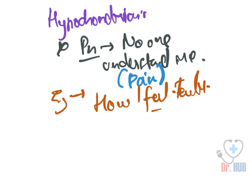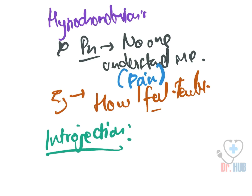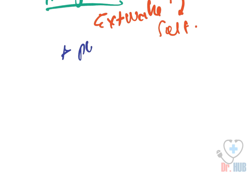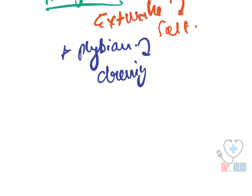Next is introjection. Introjection means that features of the external world are taken and made part of the self. An example is a physician who dresses like the attending physician whom he admires. This is nothing but introjection.